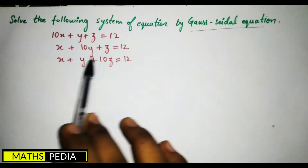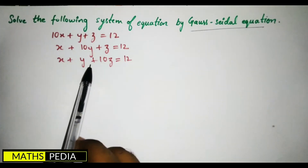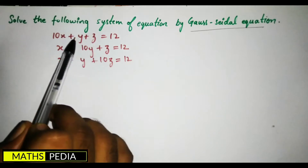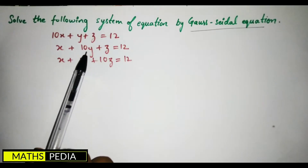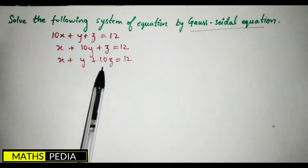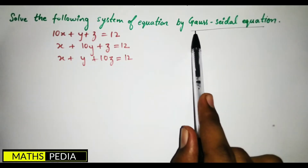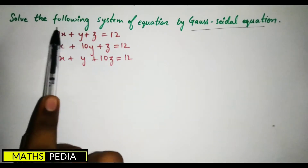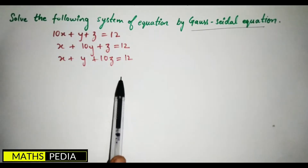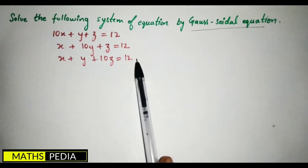The equations are given in this format — a system of equations. Now here you can observe that diagonally the coefficient of x is 10 in the first equation, the coefficient of y is 10 in the second, and the coefficient of z is 10 in the third. It is not necessary that this diagonal pattern means you have to use Gauss Seidel — it can be of a different type also.